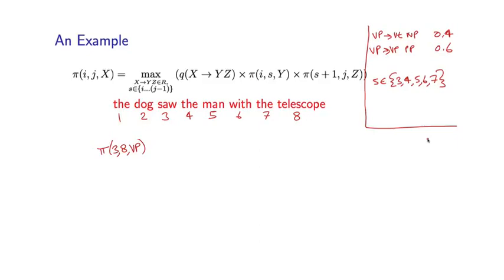So let's next give some justification for why this recursive method for calculating these pi values is correct. And again, I'll use this sentence as an example, and I'll use pi of 3, 8, VP as an example. So we're trying to find the highest probability for any VP spanning these words 3 through 8 inclusive.